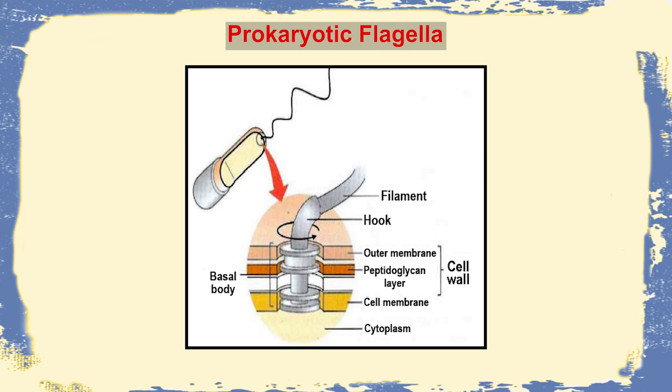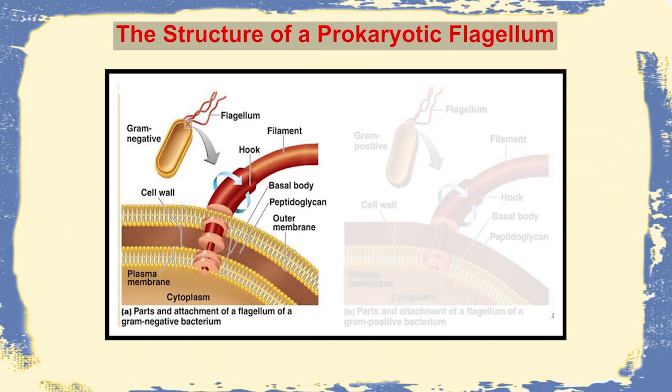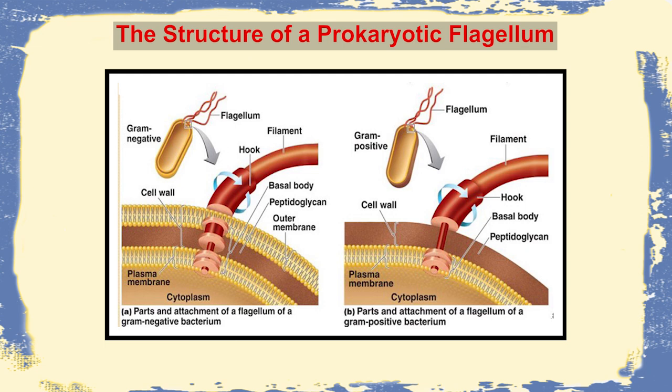The next external structure is the flagellum. Flagella are long appendages extending from the cell surface. They comprise a helical filament, a hook, and a basal body, with a size of 10 to 20 micrometers — almost four to five times longer than the bacterium itself. Their primary function is to provide locomotion. Bacteria show two kinds of motility: flagellar motility and gliding motility. Gram-positive and Gram-negative bacteria have minor differences in their flagella structures.